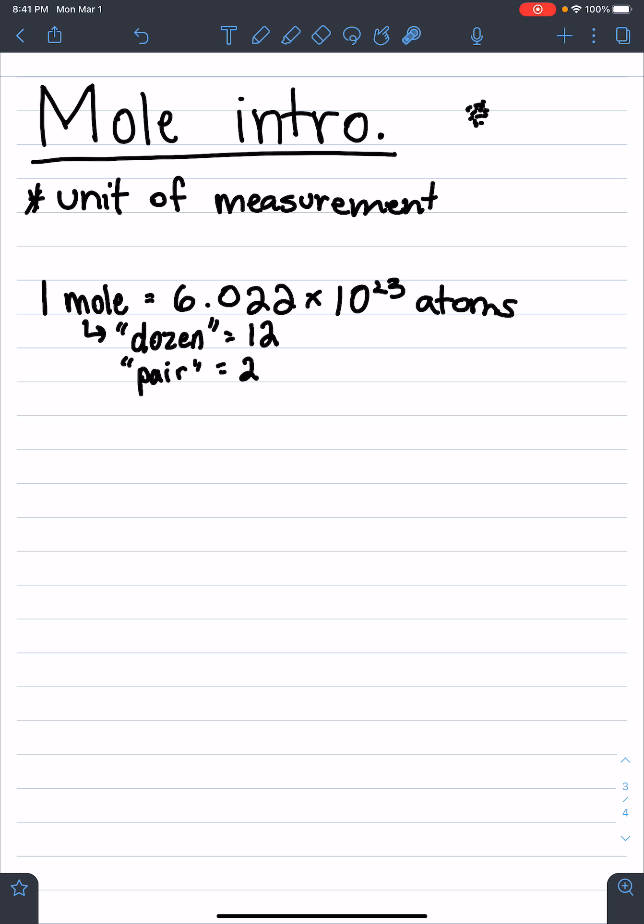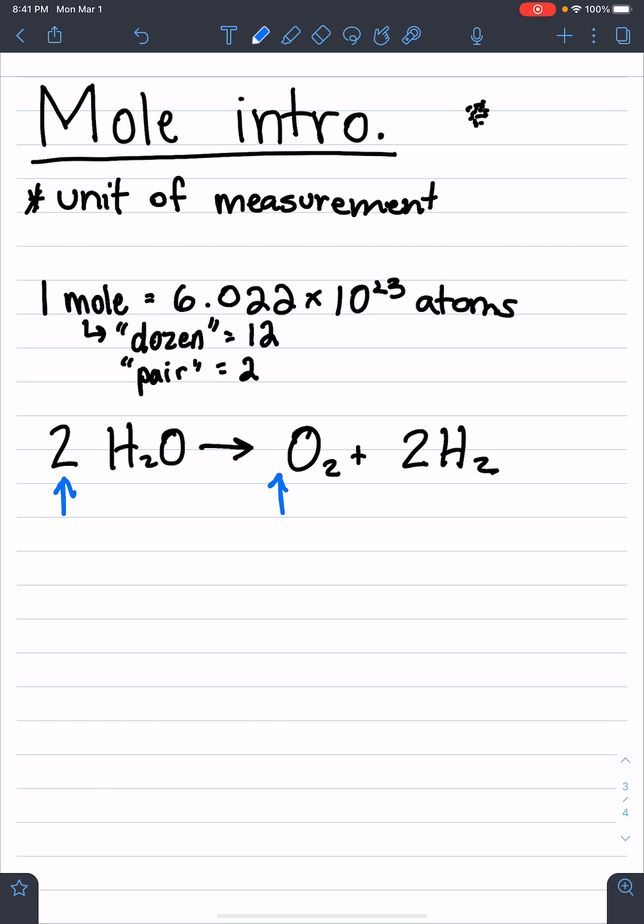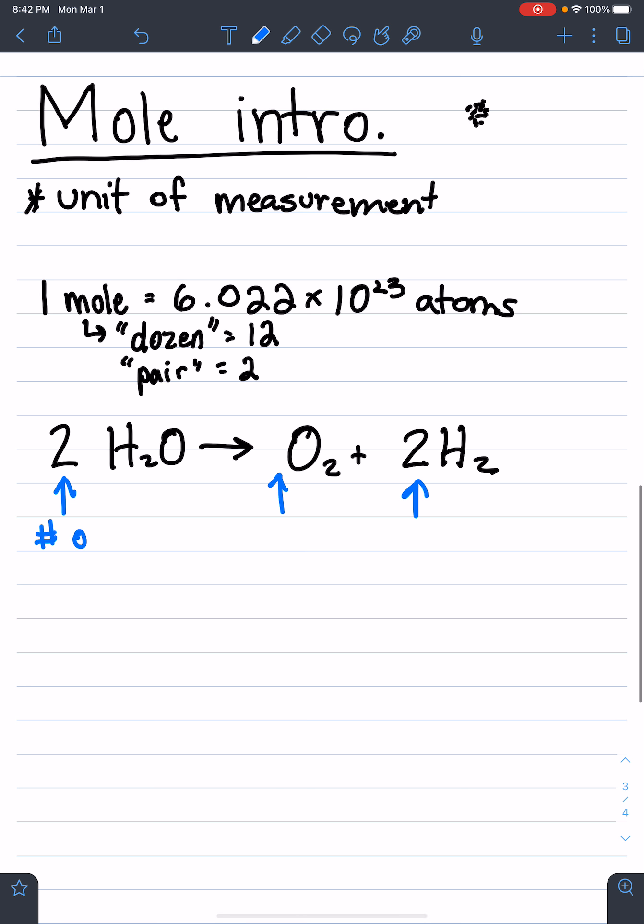So when we write chemical equations, this is an example of one. So we're writing chemical equations. These numbers in front actually tell us the number of moles that we have in this equation. All right. So all of these different numbers mean the number of moles. So in this one, we're saying we have two moles of H2O gives us one mole of O2 and two moles of H2.